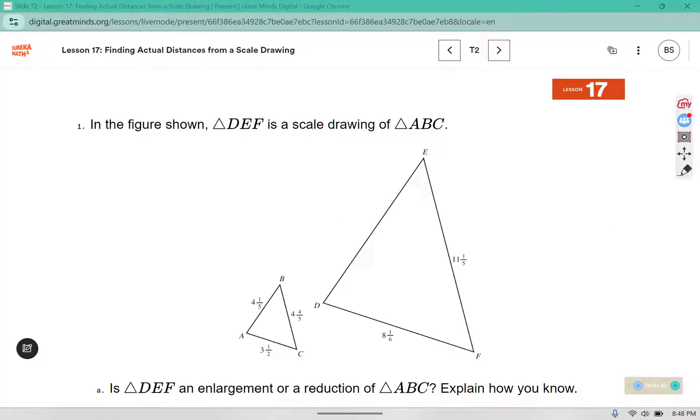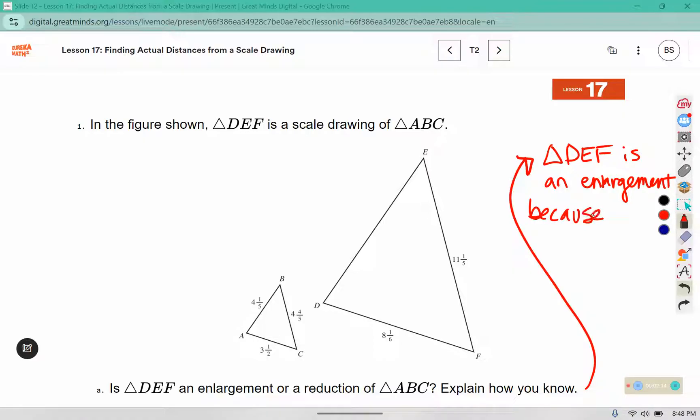In the figure shown, triangle DEF is a scale drawing of ABC. Is DEF an enlargement or reduction of ABC? Explain how you know. Triangle DEF is an enlargement because the side lengths are larger than in the original.